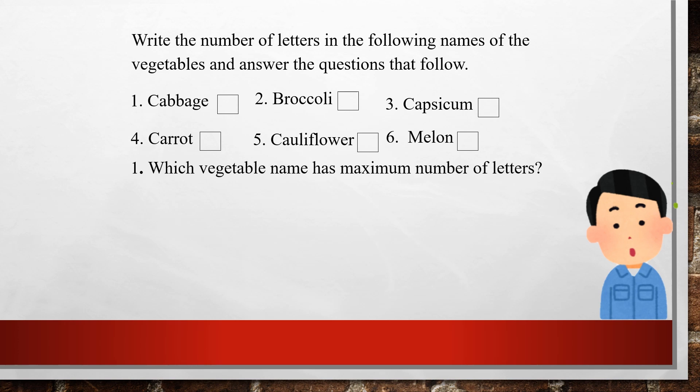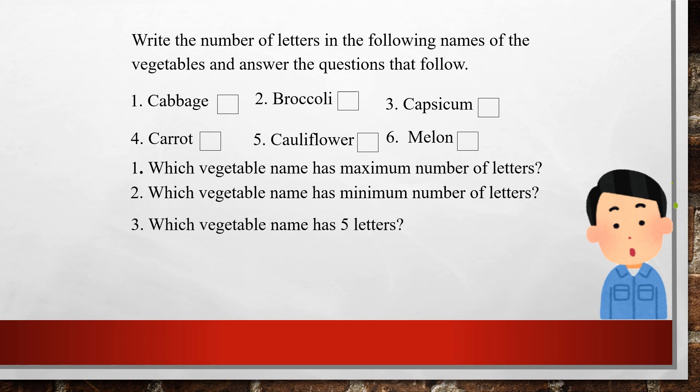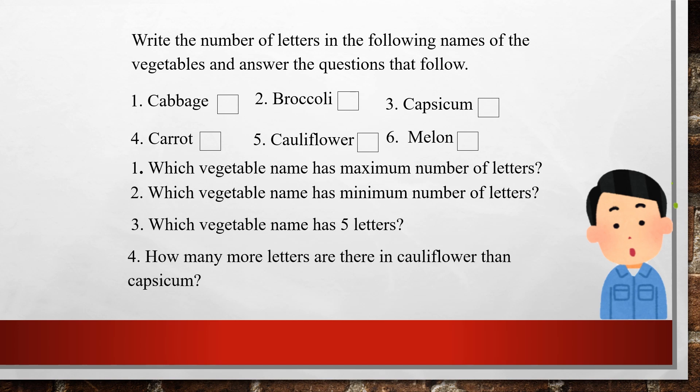Answer the questions: which vegetable name has the maximum number of letters? Which has the minimum? Which vegetable name has 5 letters? Melon has 5 letters. How many more letters are there in cauliflower than in capsicum? You have to subtract to find the answer.